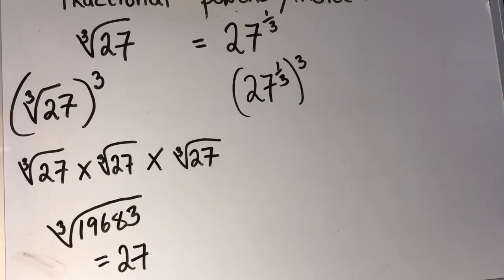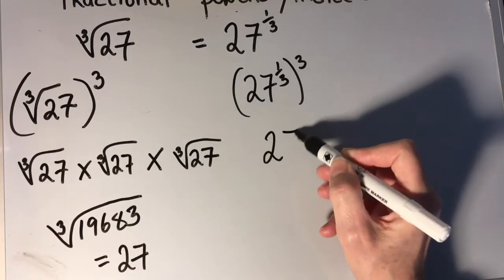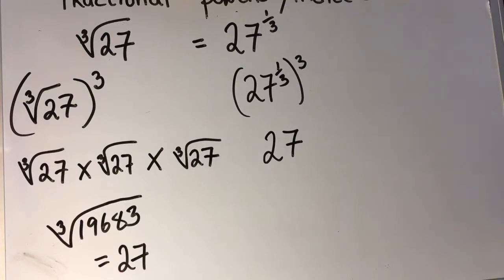One power raised to another power — multiply the indices. So 1 third times 3 is 1, giving 27 to the power of 1, which is 27. So the two things are equal. Therefore, the cubed root of 27 is equal to 27 to the power of 1 third.